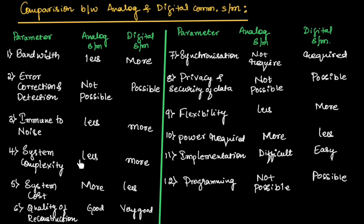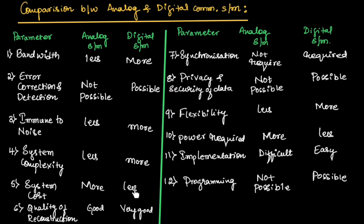The analog system has less system complexity, but digital systems are more complex in system design. In the analog system, the system cost is more, and in the digital system, the system cost is less compared to the analog system.